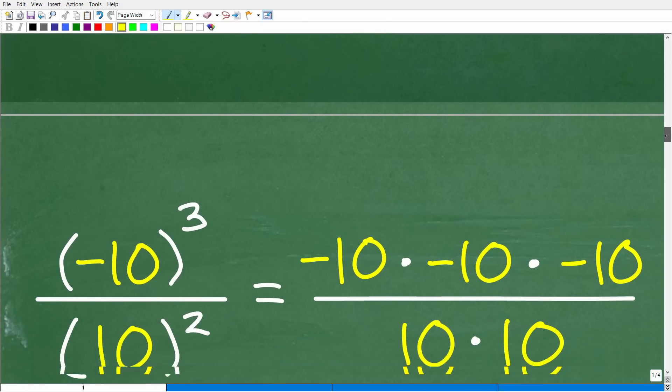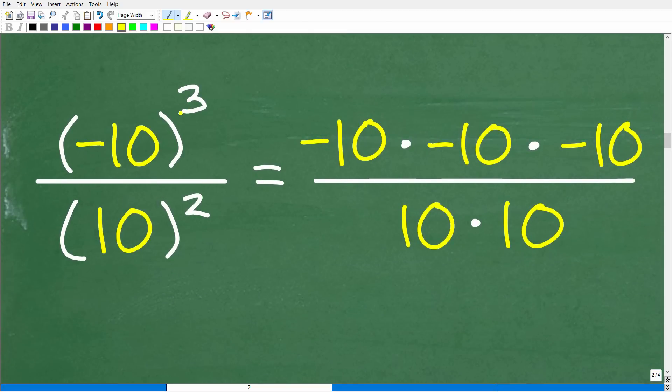Okay, so here we're at, we have negative 10 cubed over 10 squared. Now, we need to understand what negative 10 cubed means, right? Well, it means take negative 10 and multiply it by itself three times. So this is how a power works, negative 10 times negative 10 times negative 10.